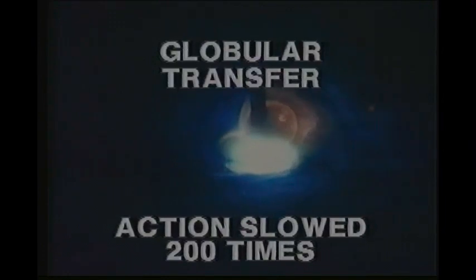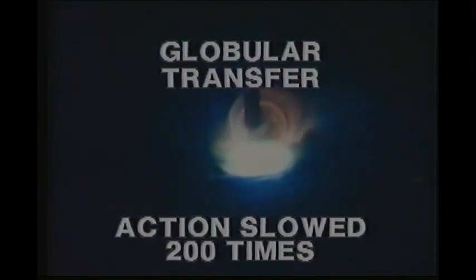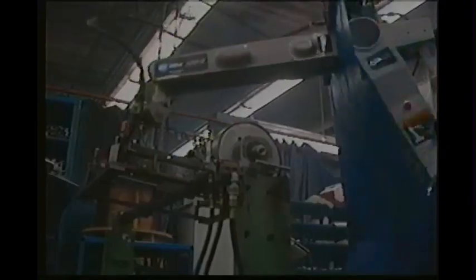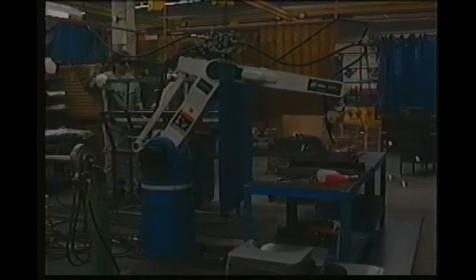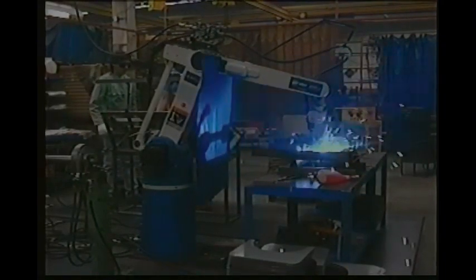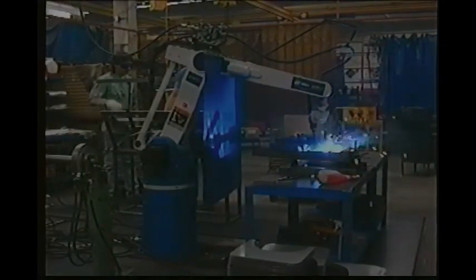Globular transfer takes place when parameters are between short-circuit and spray transfer. Due to large globular droplets, the transfer is erratic. This results in spatter and poor weld quality. Production welding applications can successfully apply high amperage and voltage parameters with argon and CO2 gas mixtures. This globular to modified spray transfer produces fast yet quality weld results.